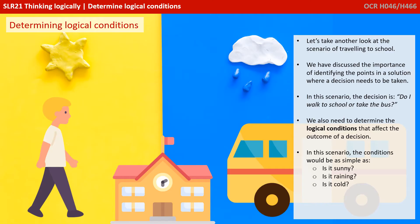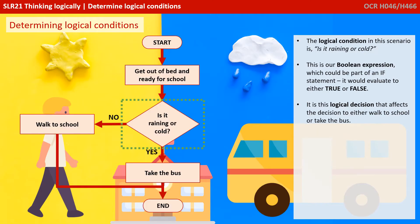In this scenario the conditions would be as simple as, is it sunny, is it raining, or is it cold? The logical condition in this scenario is, is it raining? This is our Boolean expression, which could be part of an if statement. It would evaluate to either true or false. It is this logical decision that affects the decision to either walk to school or take the bus.